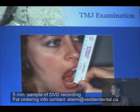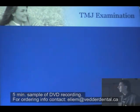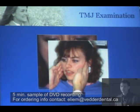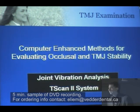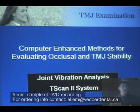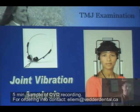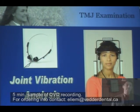TMJ examinations may be something as simple as range of motion — lateral ranges, deviations or deflections, palpations. My preference is to utilize two devices: joint vibration analysis and the T-scan. Joint vibration analysis utilizes sensors placed over the joint. I describe it to my patients as an EKG for the joint — we simply listen to the joint and the sounds spit out on the monitor.